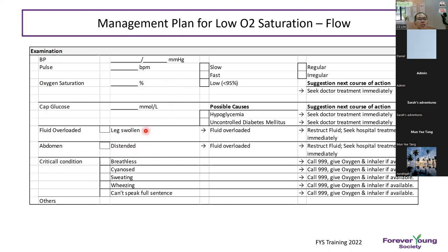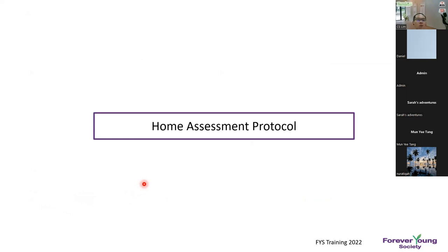On examination for low oxygen saturation, check blood pressure and all vital signs. Look for signs of fluid overload — while pulmonary edema may not be detectable by auscultation, check for neck vein distension and leg edema. If the patient has breathlessness, sweating, wheezing, and can't speak, call 999 immediately. These are the key parameters detected by the Missy Watch, which alerts the children asking whether to send a nurse to assess.